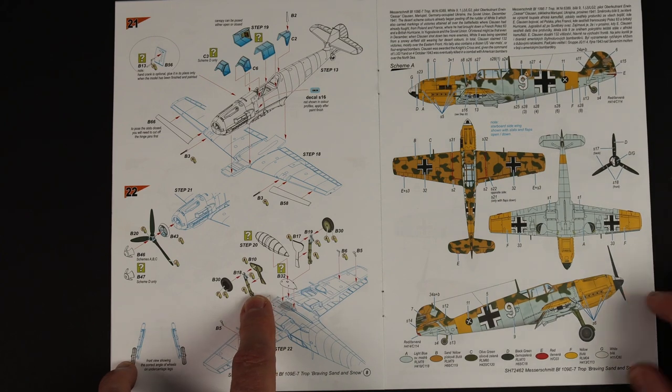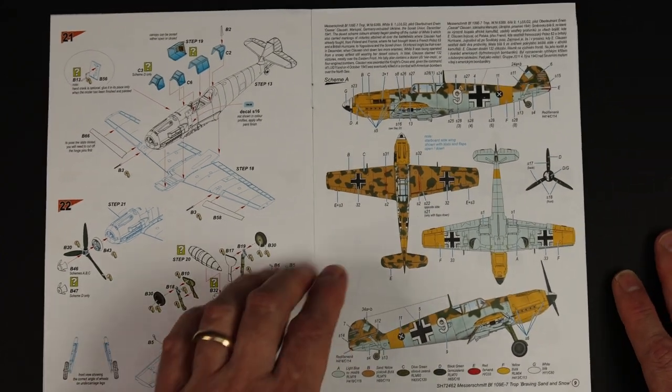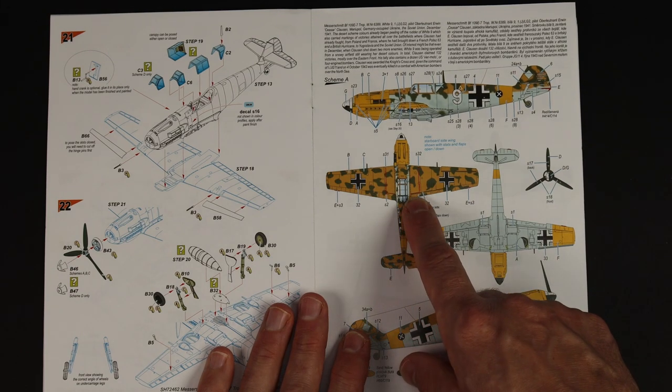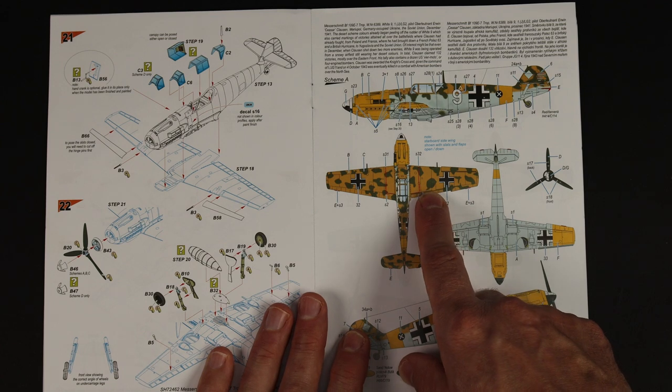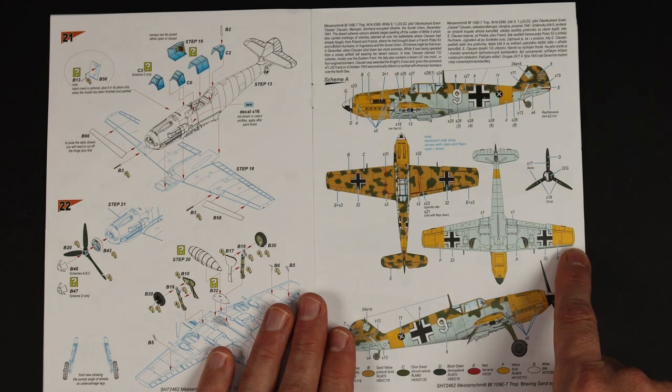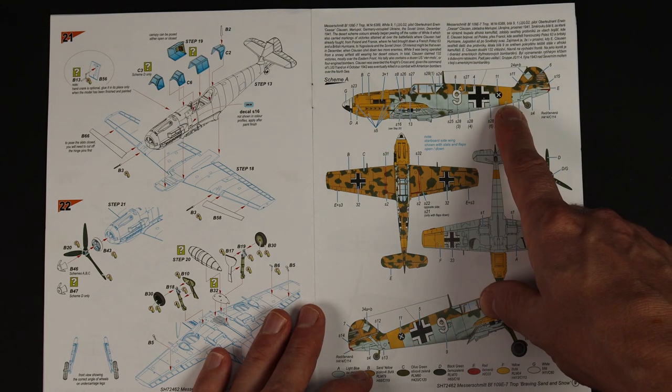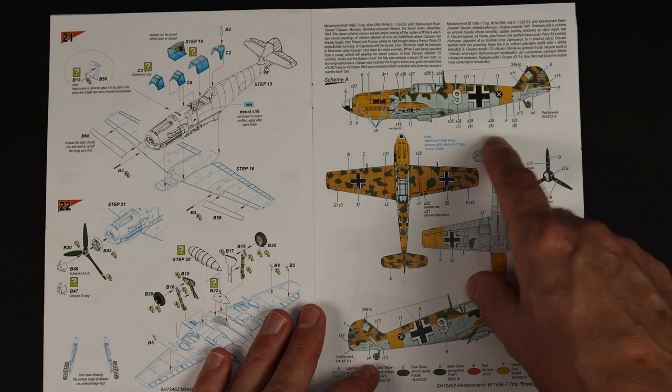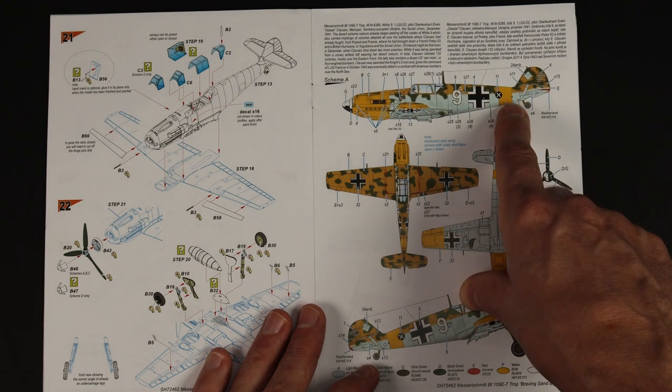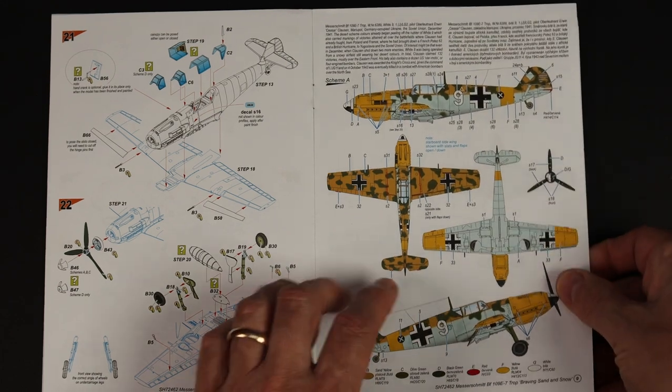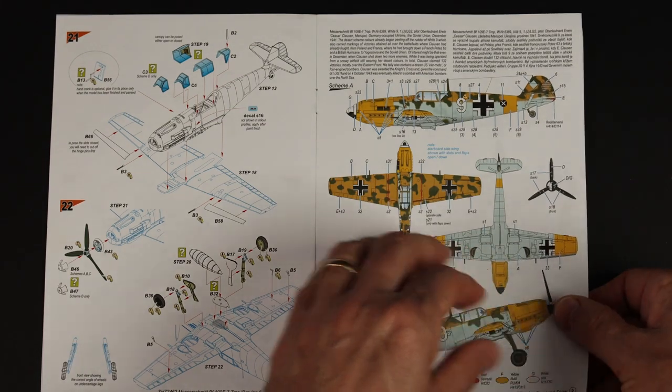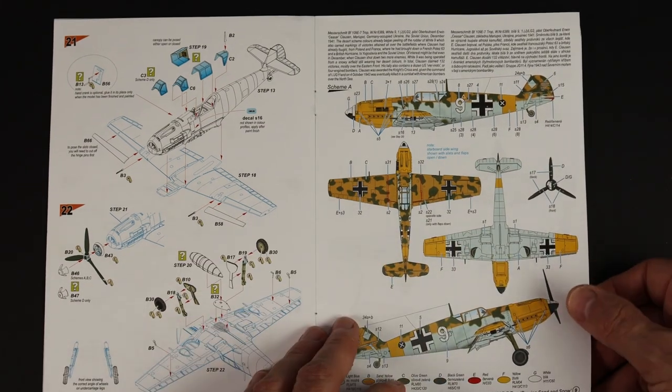And then straight into the color pullouts. So this one's beautiful, it's your standard RLM 79 with 80 blotches, but yellow nose, yellow wingtips and a yellow fuselage band. So really really colorful and this actually served on the eastern front, hence the yellow wingtips and fuselage band. It did actually transfer, so I guess in theory you could paint those white and do it before it transferred to the eastern front.